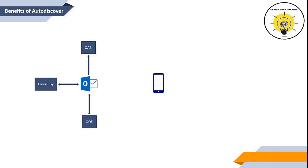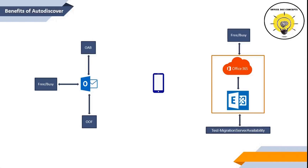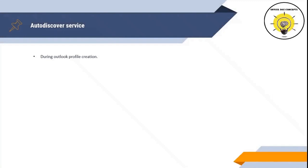Autodiscover service is also used by mobile devices to configure Exchange profiles. In a hybrid deployment, Autodiscover service is used for free busy lookups and to check the connectivity between Exchange Server and Office 365. It is used during Outlook profile creation, and it runs at set intervals to collect changes to URLs that provide Exchange Web services like out of office and availability service.